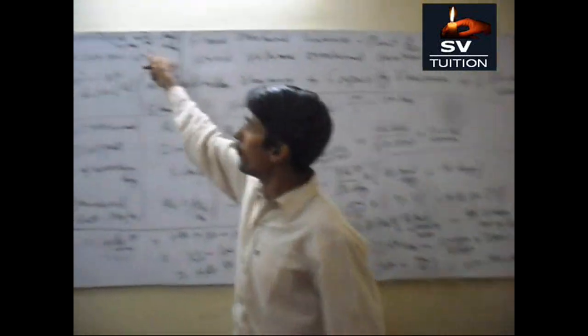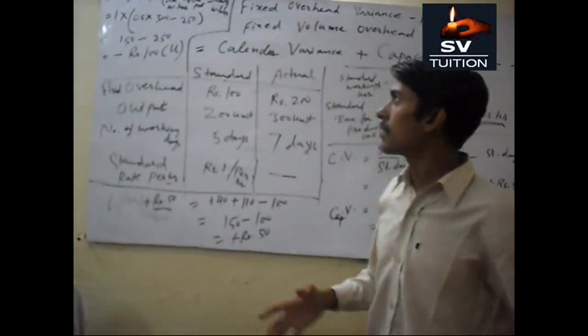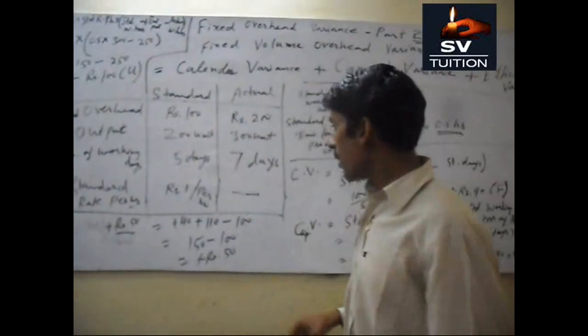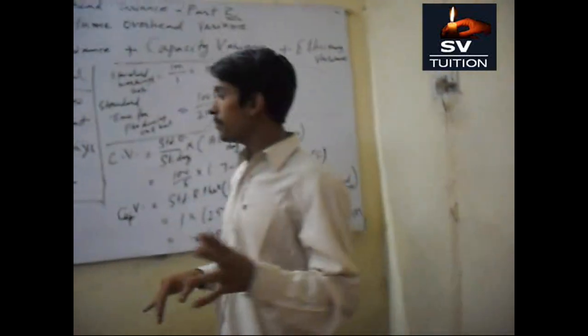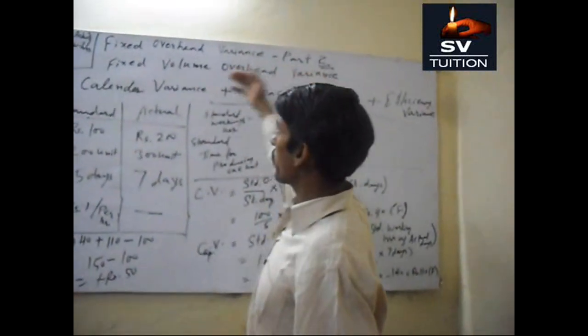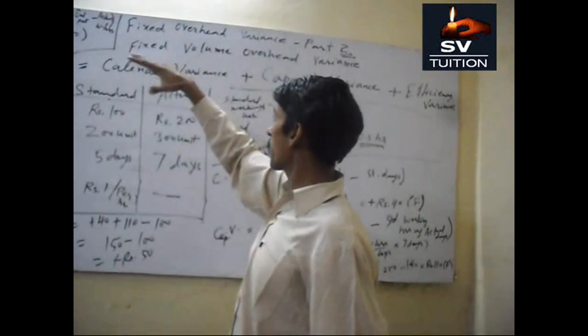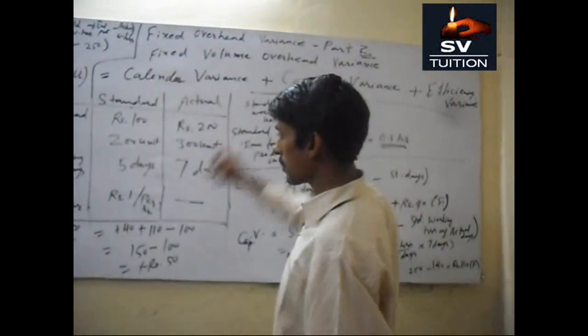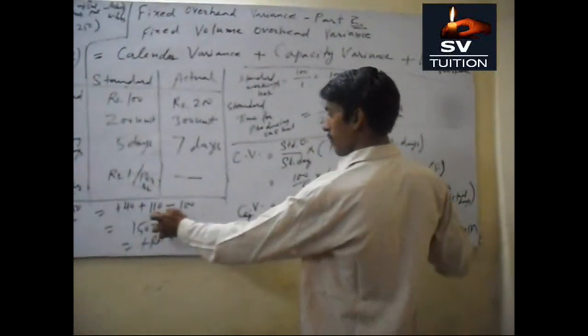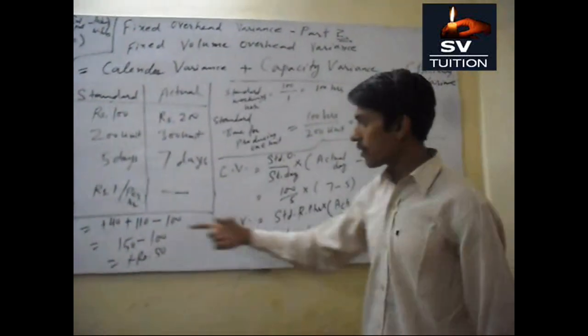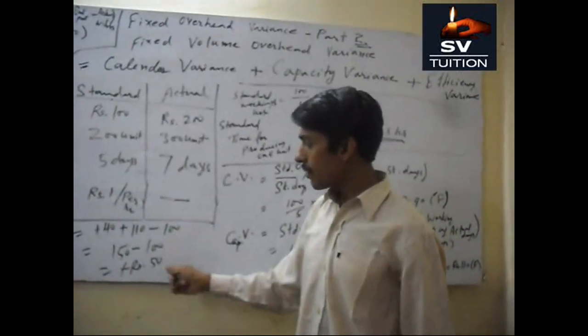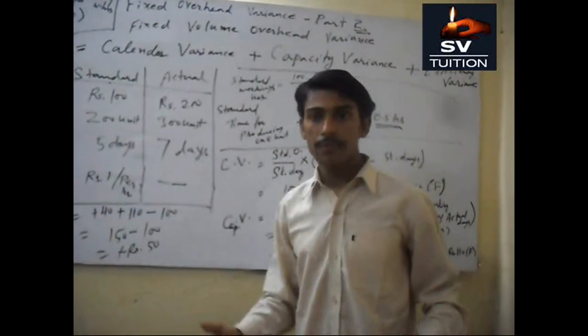This is the efficiency variance, minus 110. Calendar variance is 40 and capacity variance is 110 and efficiency variance is minus 110 and this is plus 50.